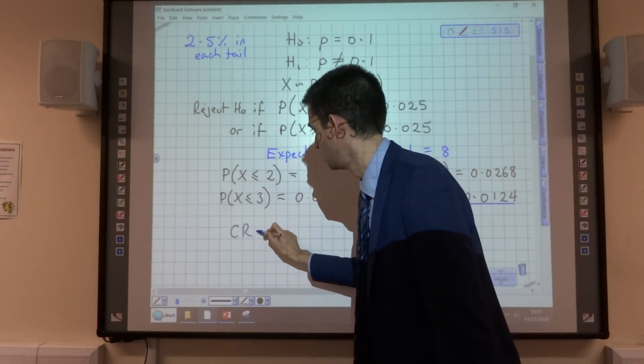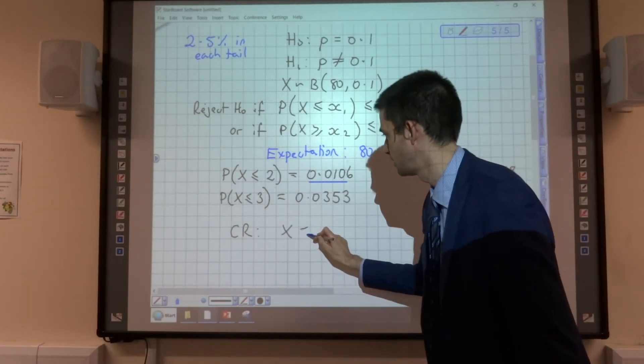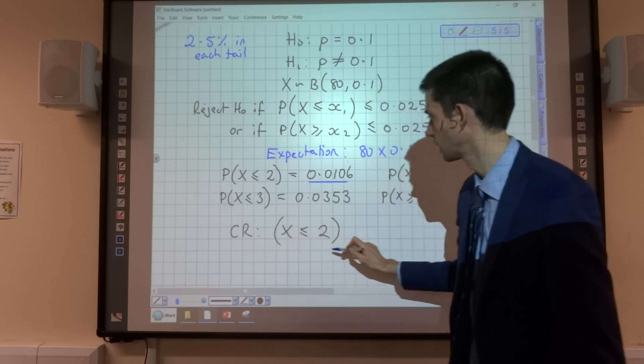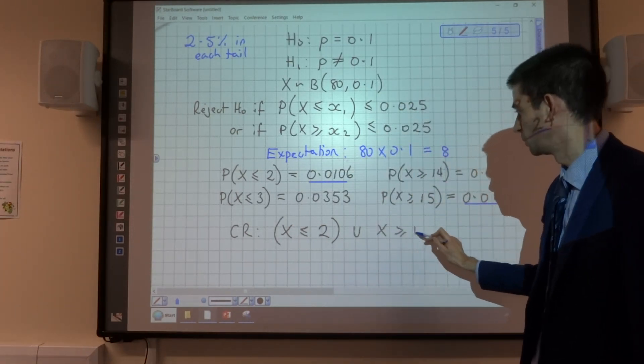So the answer to my question here, the critical region for rejection, is if X is less than or equal to 2, or if X is greater than or equal to 15.